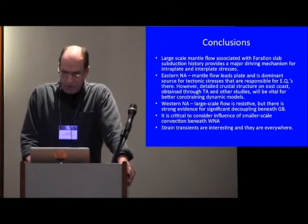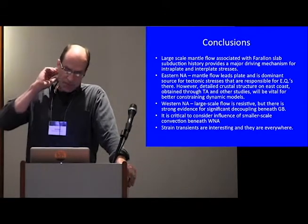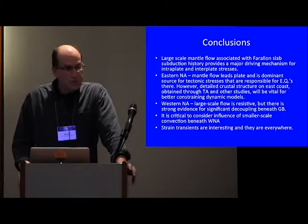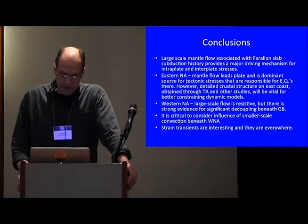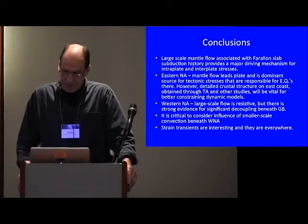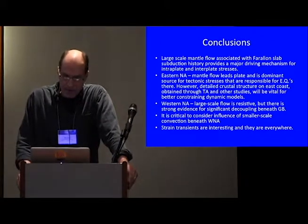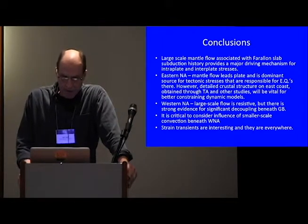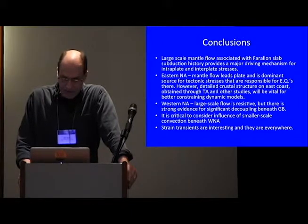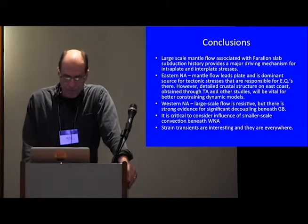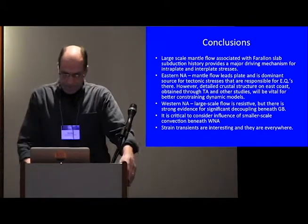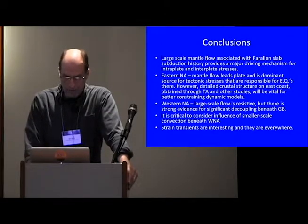So in summary, I've talked about large-scale mantle flow associated with the Farallon slab, and that's related to the subduction history, and it's a major driving mechanism for interplate and intraplate stresses. Eastern North America, the mantle flow leads the plate, and it's a dominant source for tectonic stresses there. Those stresses are responsible for the earthquakes. However, the detailed crustal structure on the East Coast, obtained through the TA and other studies, will be vital for better constraining dynamic models for the East Coast. For Western North America, the large-scale flow is resistive, but there's strong evidence for significant decoupling beneath the Great Basin. I mentioned the smaller-scale convection there. It's there. It's a lot more complicated than this simple picture I painted, and that has to be considered to understand Western North America.